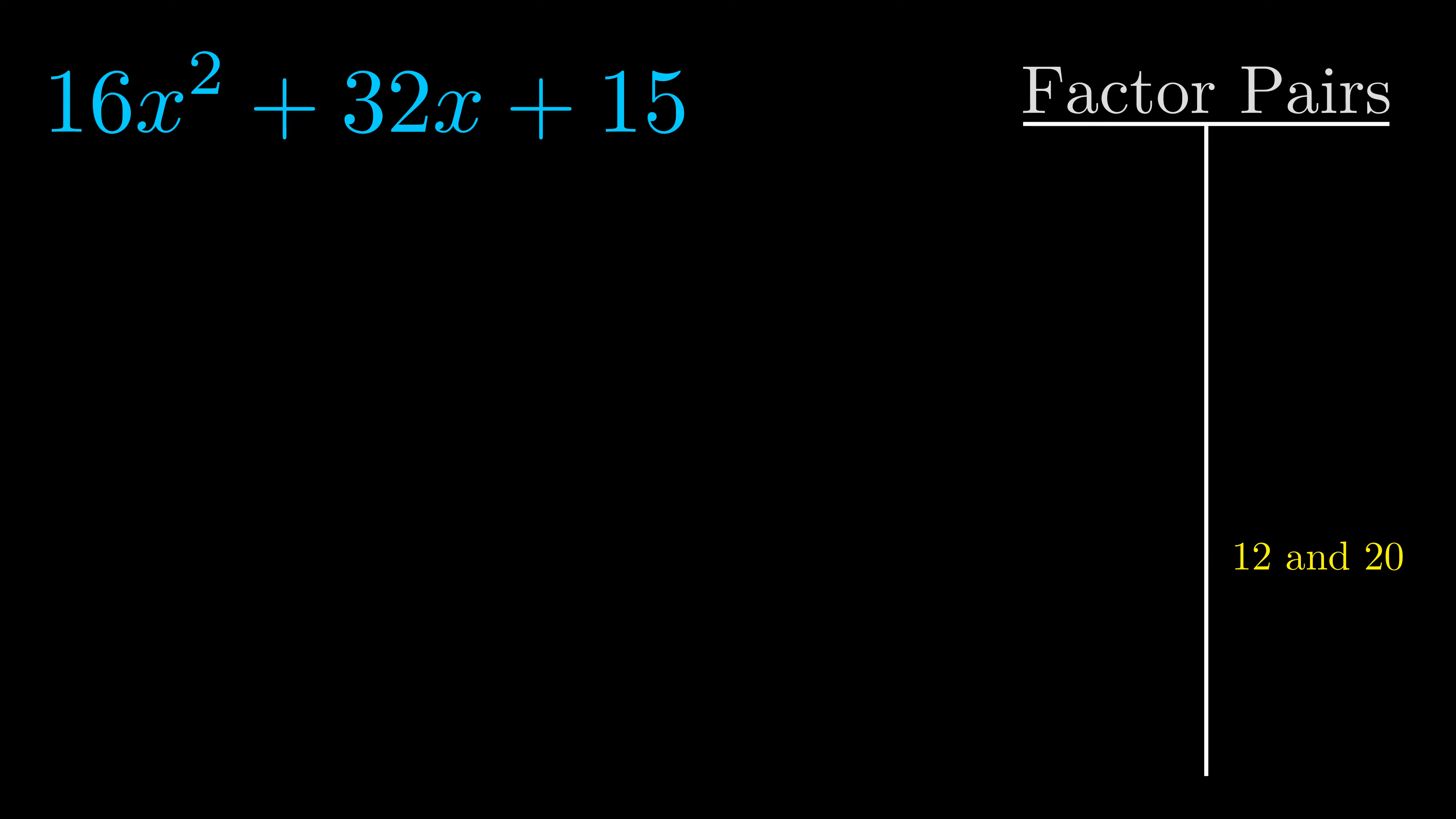Now once we have this factor pair what we want to do is use it to split up the b value.